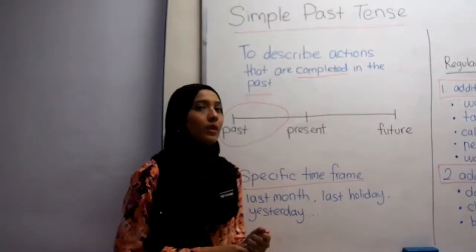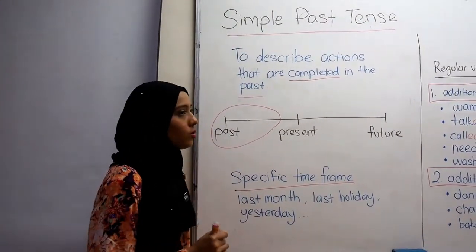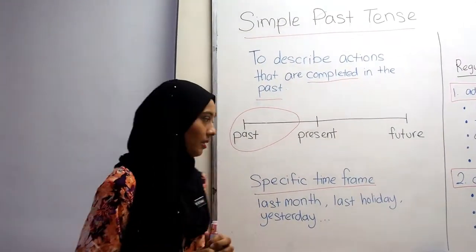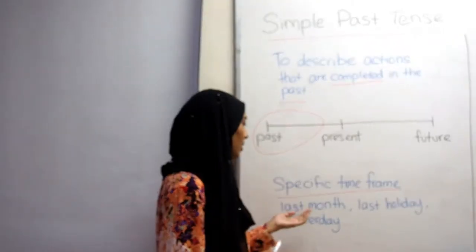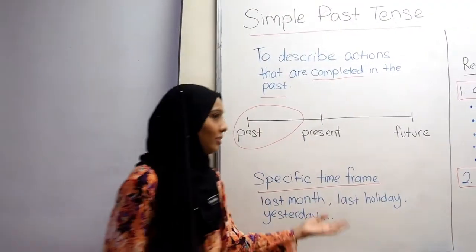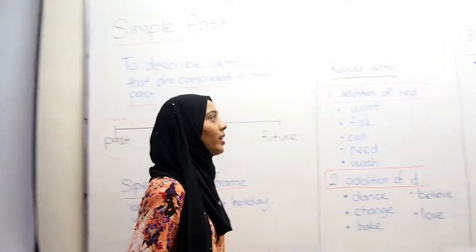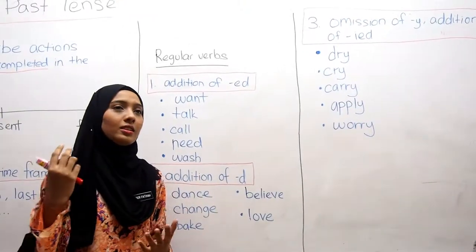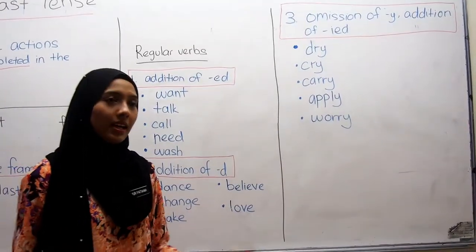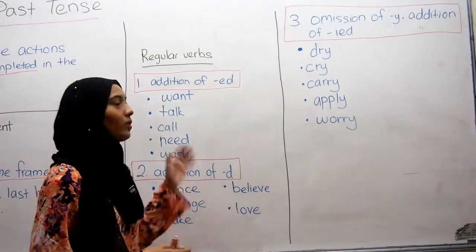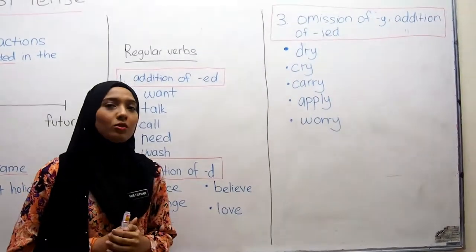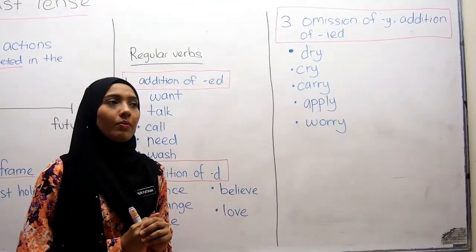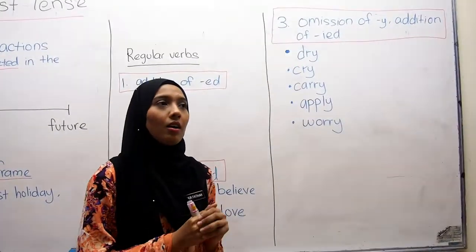Let's go to the specific time frame. People usually use specific time frames to indicate that a sentence is in simple past tense. Now let's move on to how to form simple past tense sentences. There are two things you need to know: regular verbs and irregular verbs. Regular and irregular verbs take different forms for simple past tense.